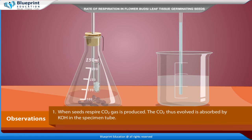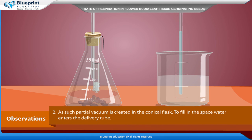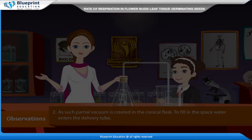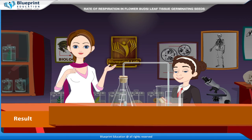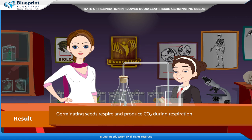Observation: When seeds respire, CO2 gas is produced. The CO2 thus evolved is absorbed by KOH in the specimen tube. As such, a partial vacuum is created in the conical flask. To fill in the space, water enters the delivery tube. Result: Germinating seeds respire and produce CO2 during respiration.